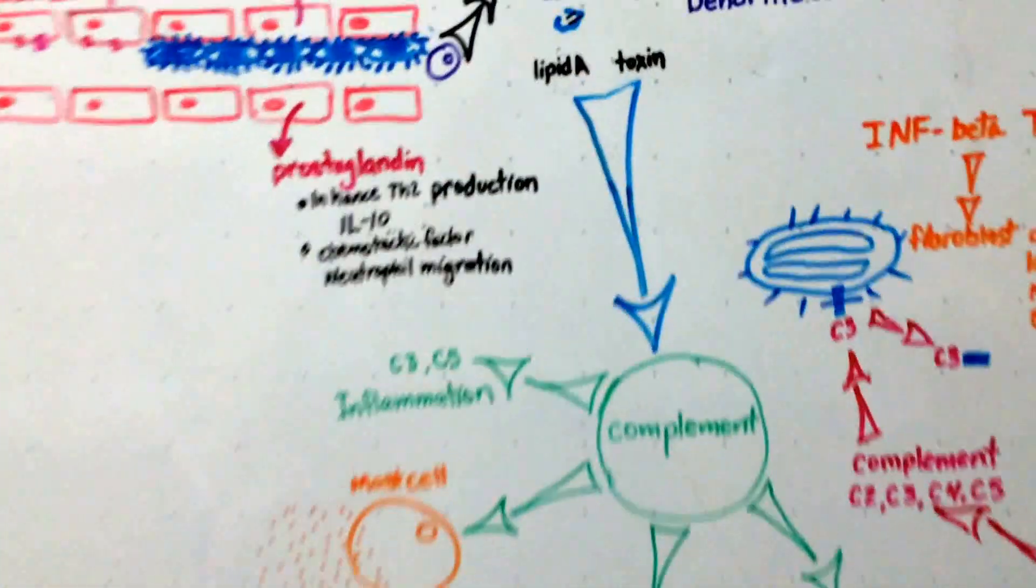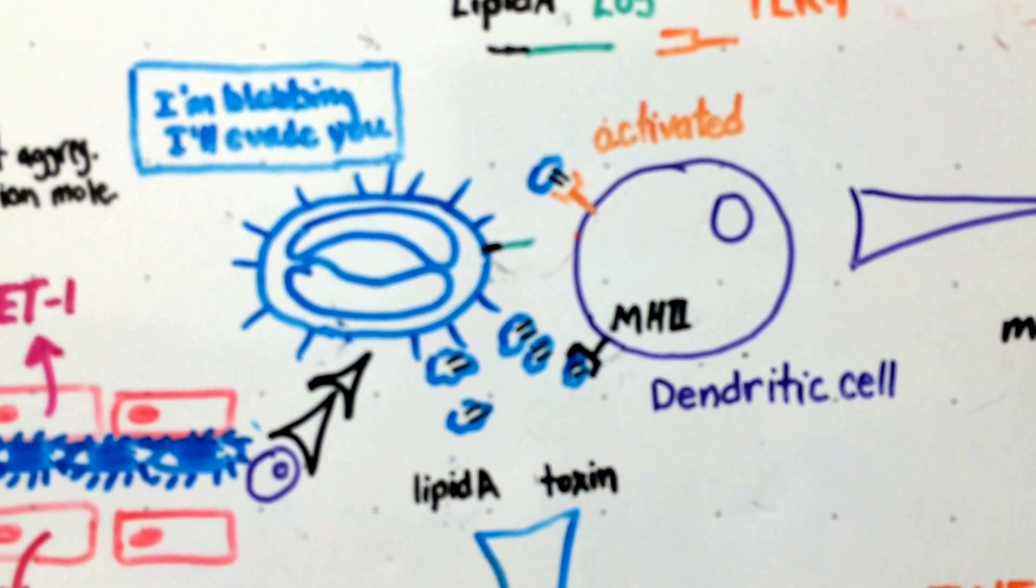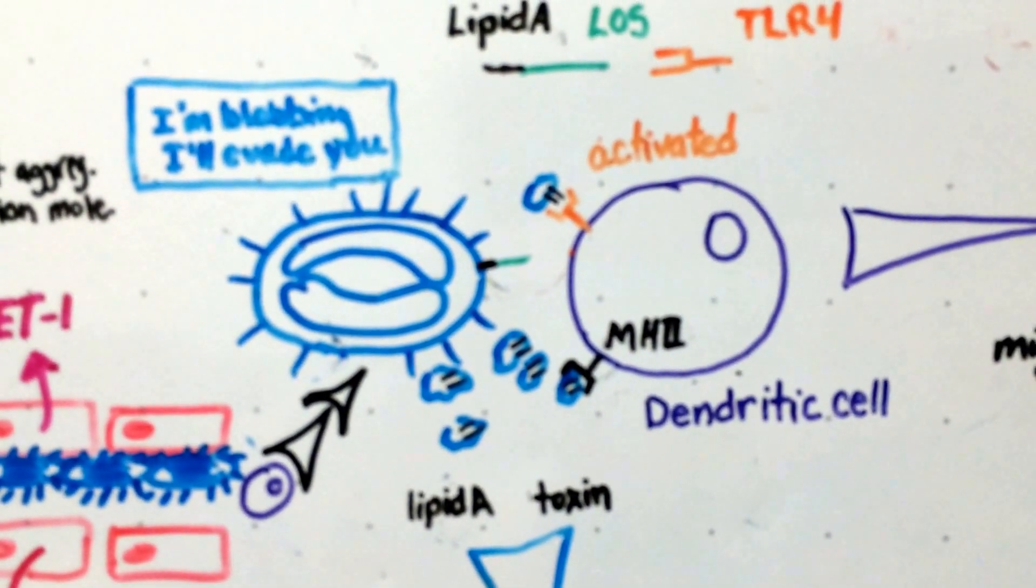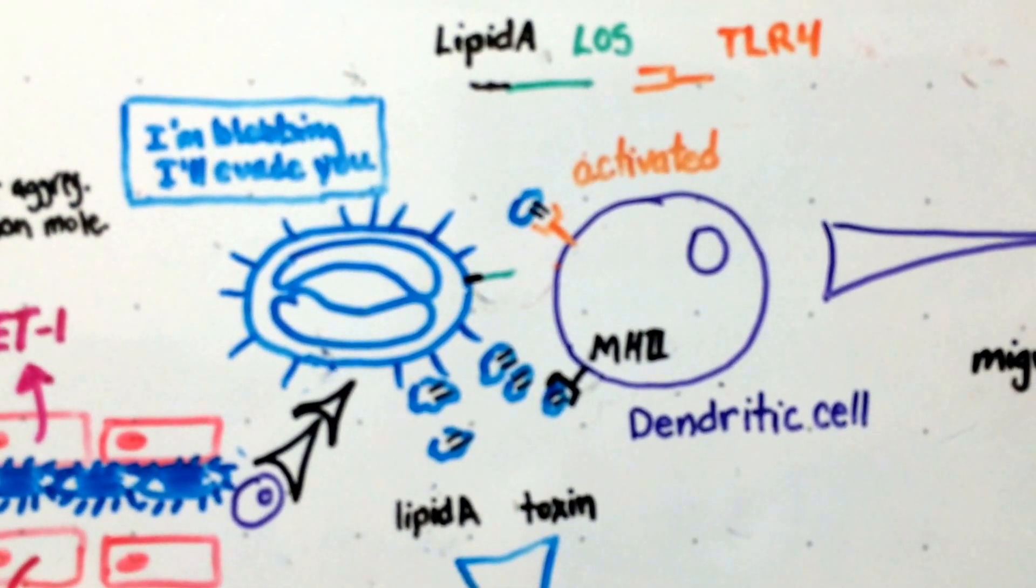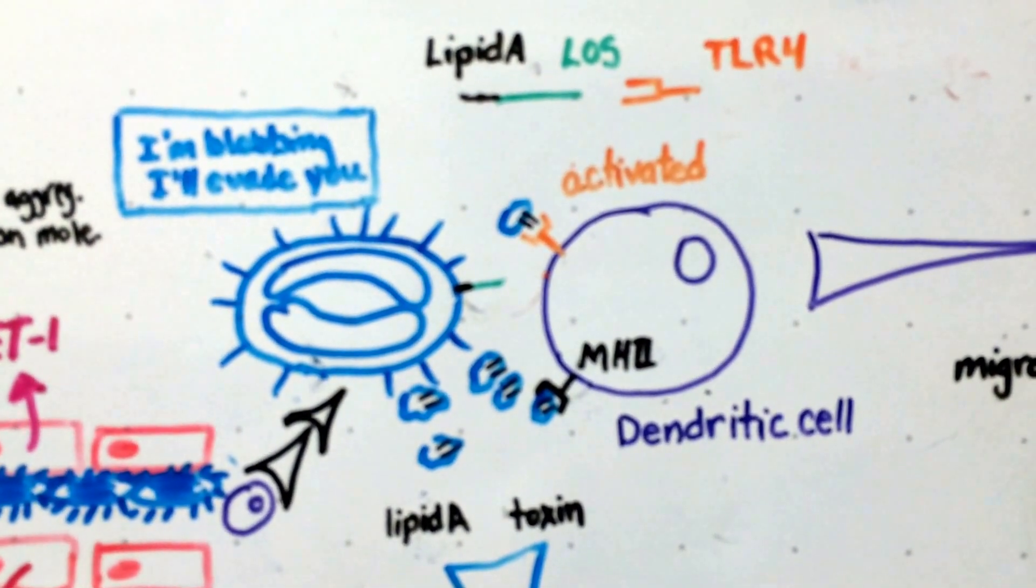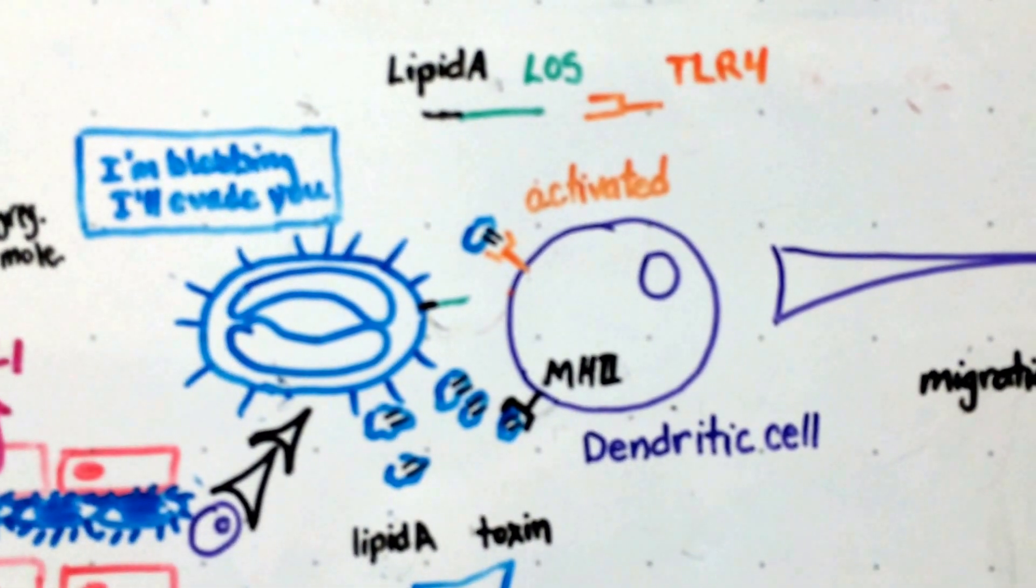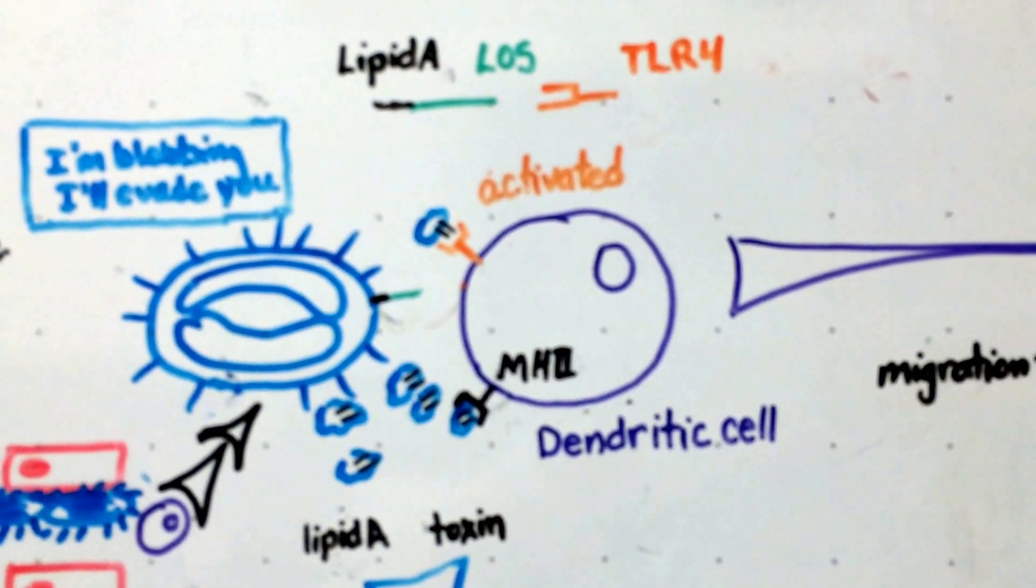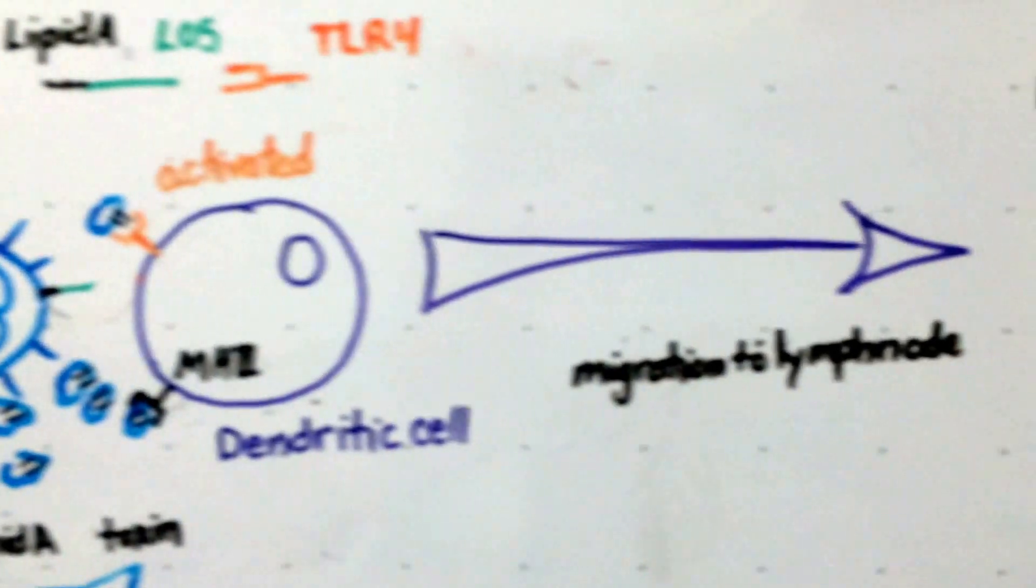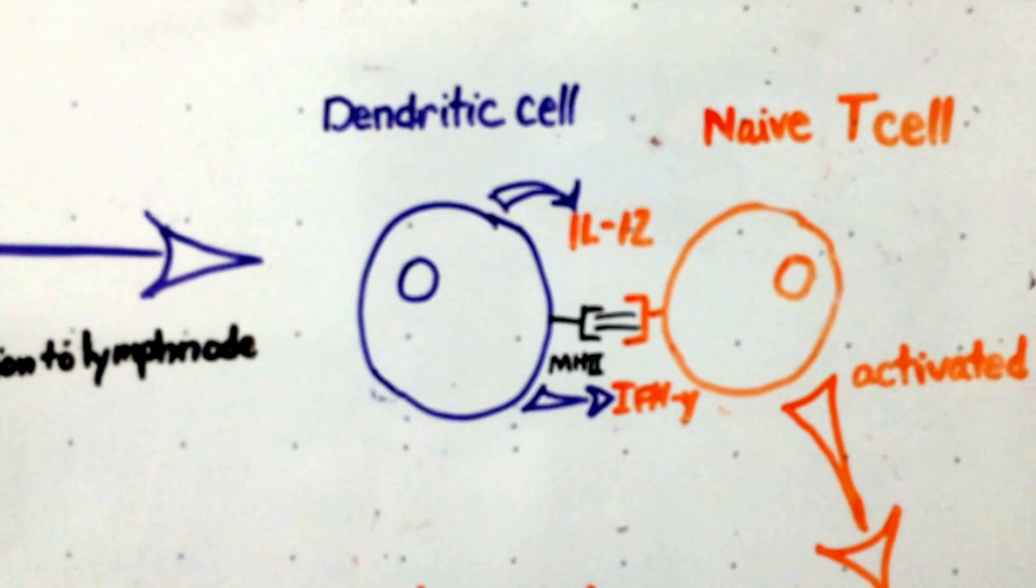Back up here to the interaction with our Neisseria meningitidis in our dendritic cell. So our toll-like receptor 4 has been activated and the MHC2 has picked up a part of our bacteria. So the pathogen has been recognized. That dendritic cell travels through the lymph node and finds the naive T cell.